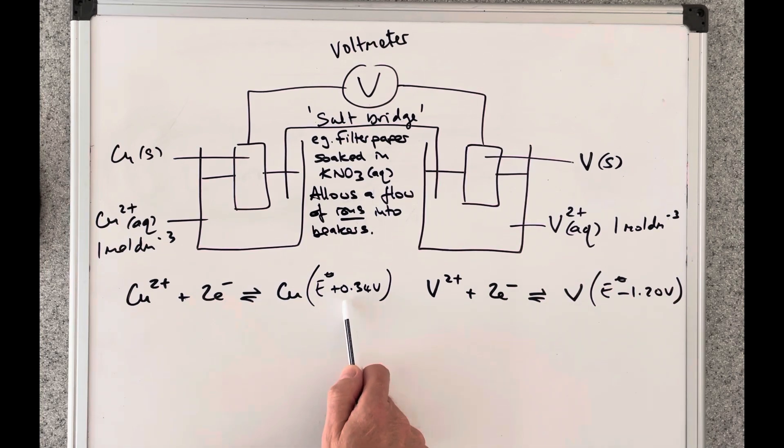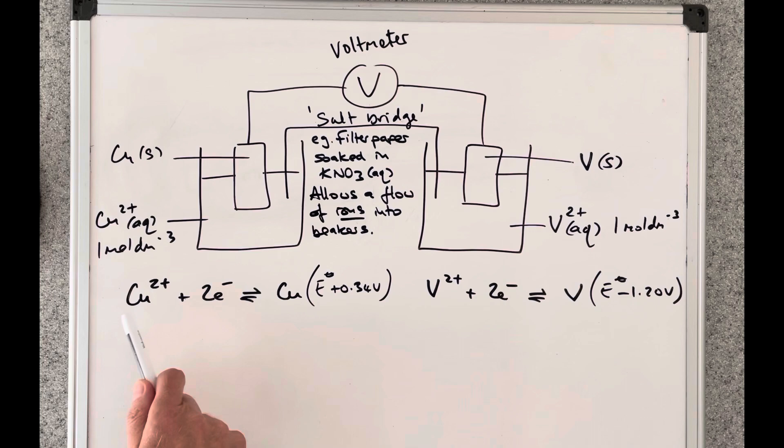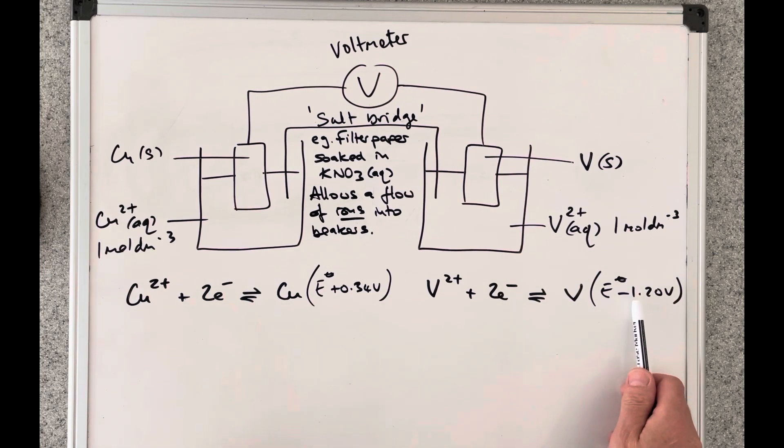So we've got plus 0.34 volts for this one the copper 2 plus copper one and minus 1.20 volts for the vanadium 2 plus vanadium one.